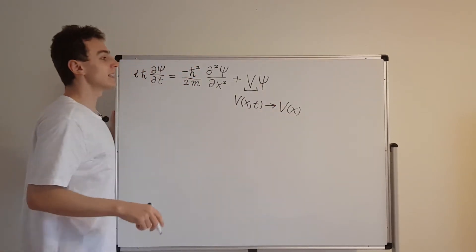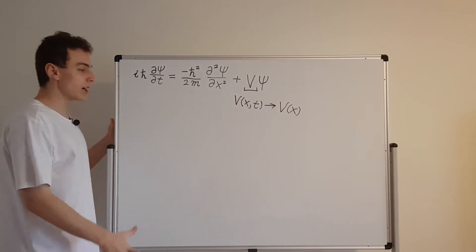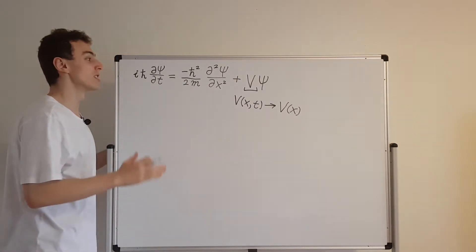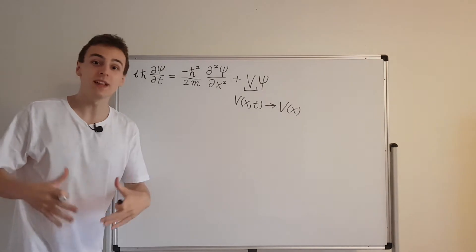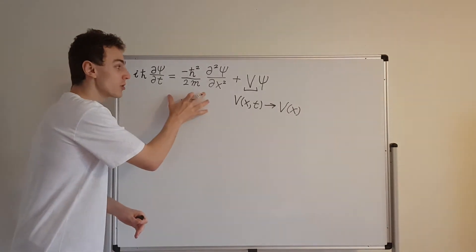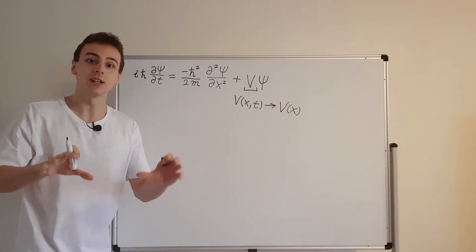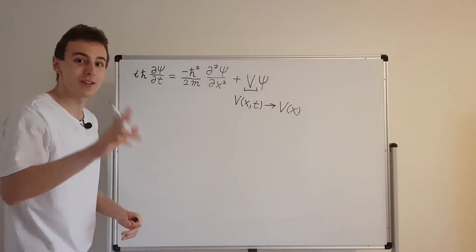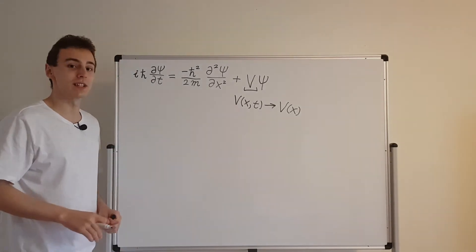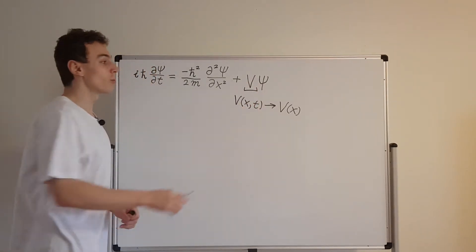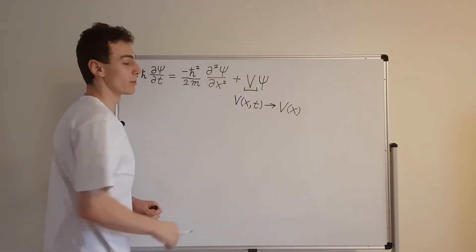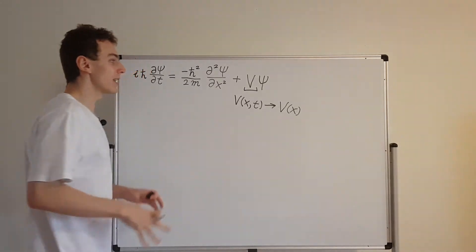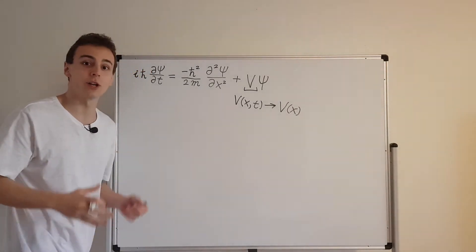ψ is still a function of x and t, so now we have everything we need. This is a partial differential equation, and we're going to use the method of separation of variables to turn this PDE into two ordinary differential equations. Ordinary differential equations are a bit easier to solve. We'll see that one of them is easy to solve, but one of them is difficult depending on V — because depending on what function we have for the potential energy, we'll have to use different techniques.